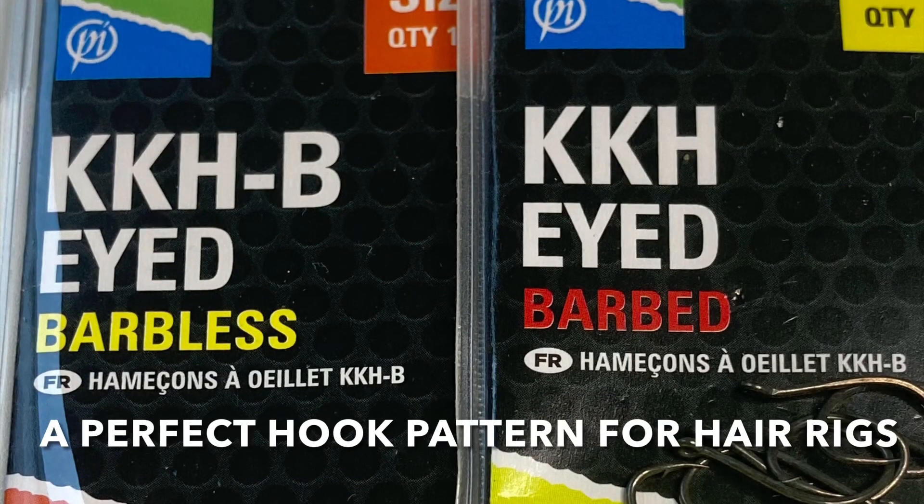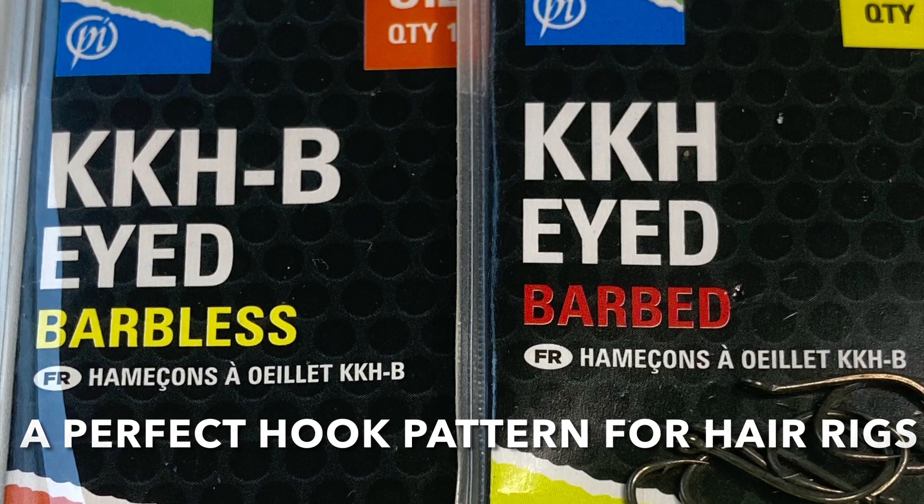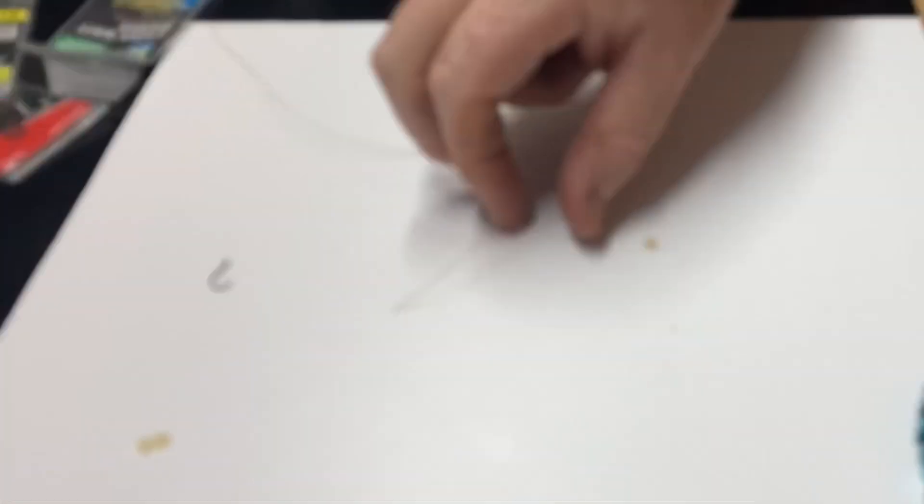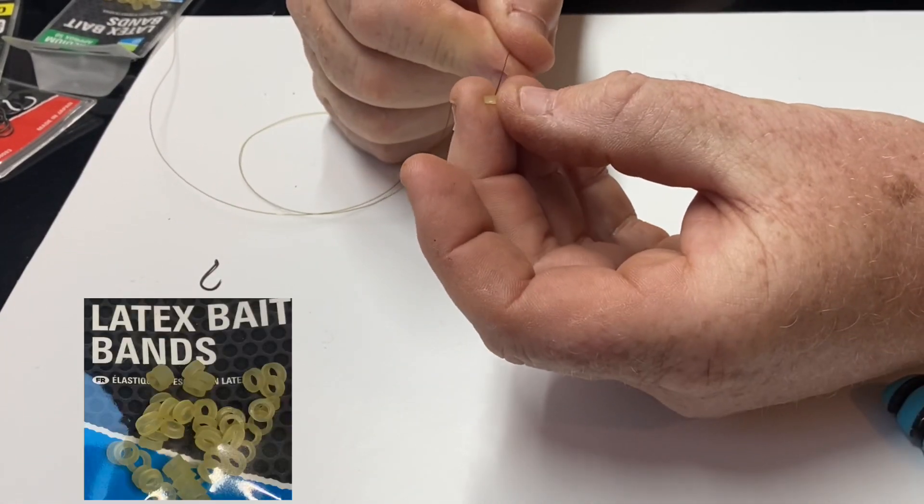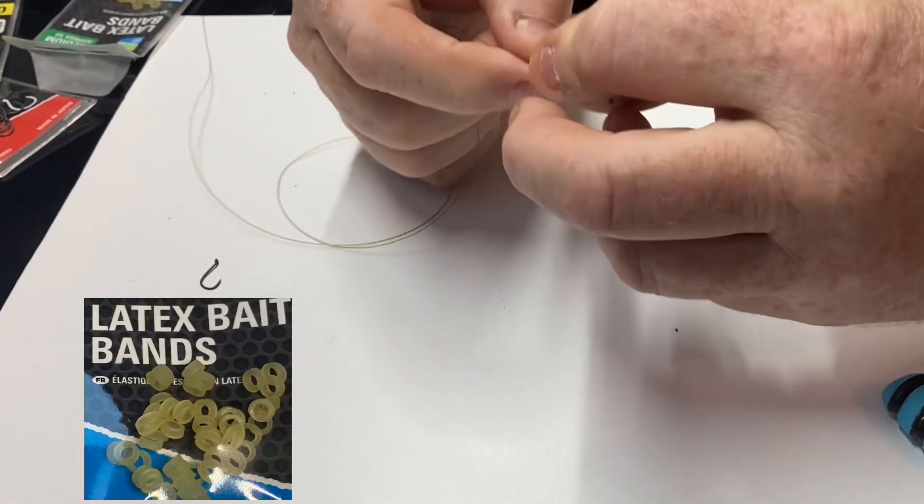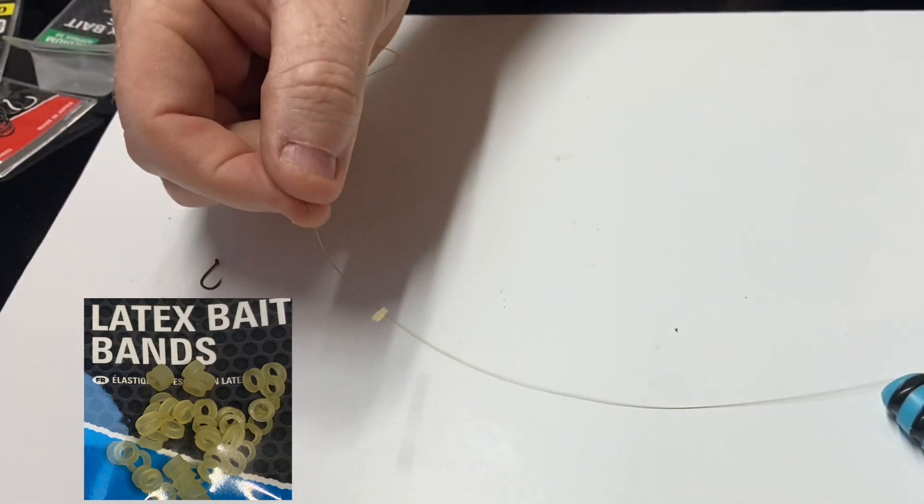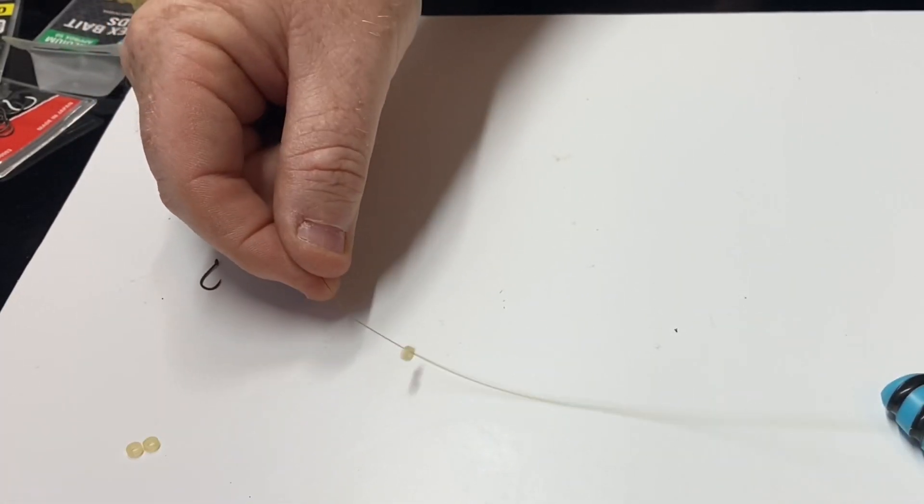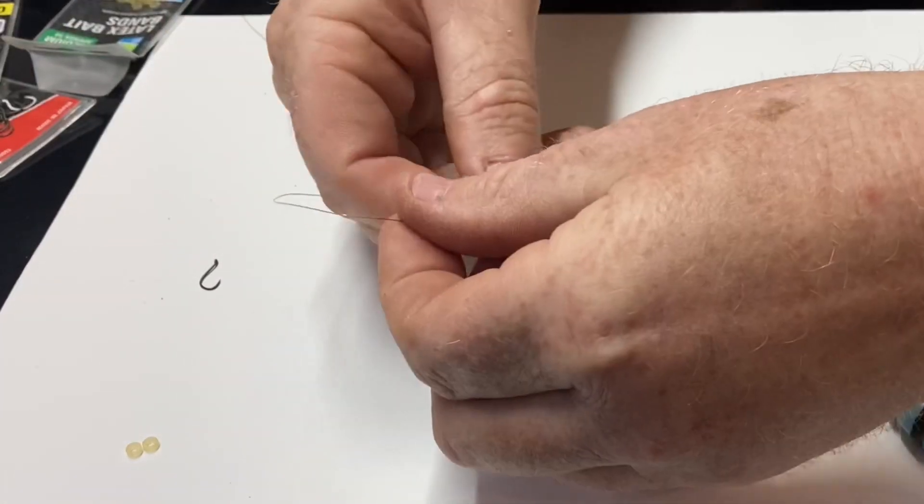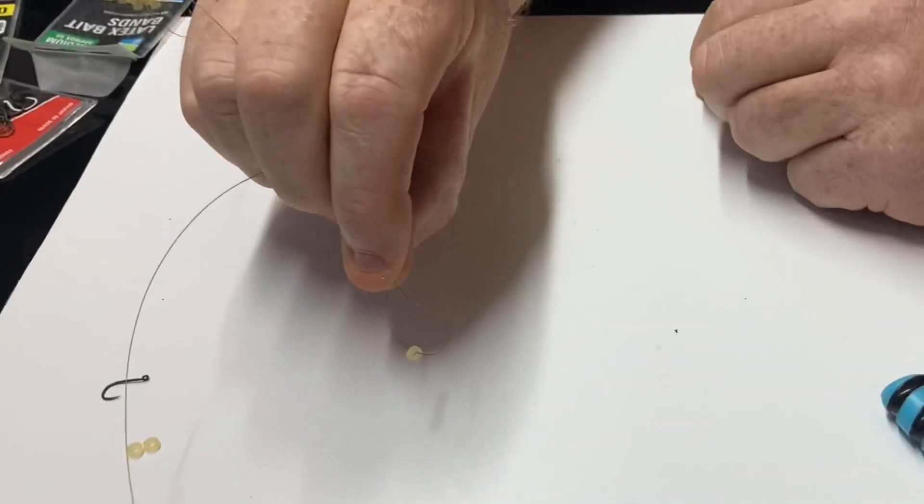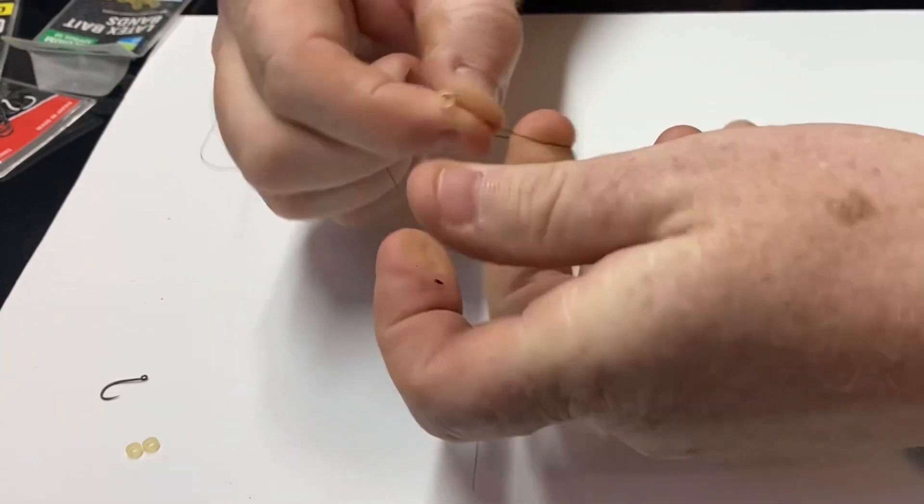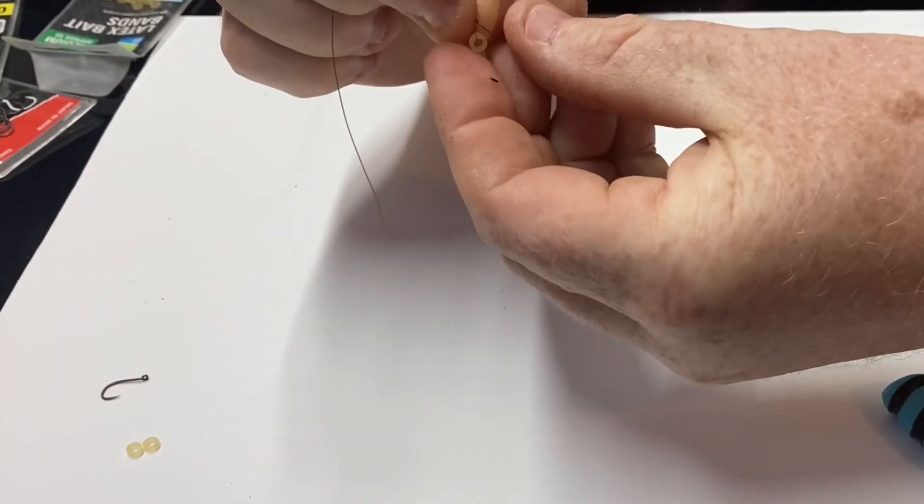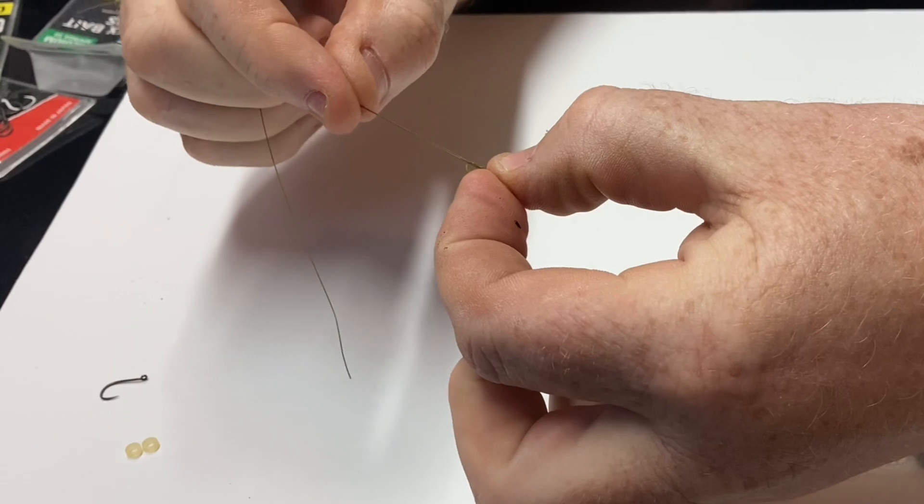First things first, get your line and slide your latex band onto your line. Put that line quite the way through. If you're trying to tie a knot, it's very difficult if you've got a short tag at the other end. So that band is now on the piece of line. What I'm just going to do is a simple knot around my finger and slide that band back through.